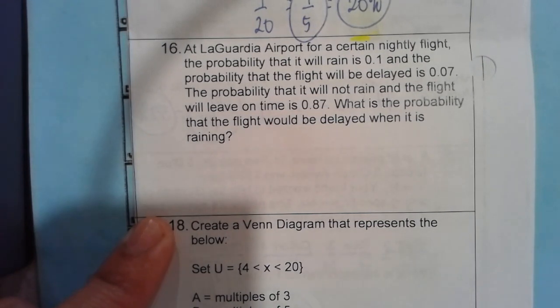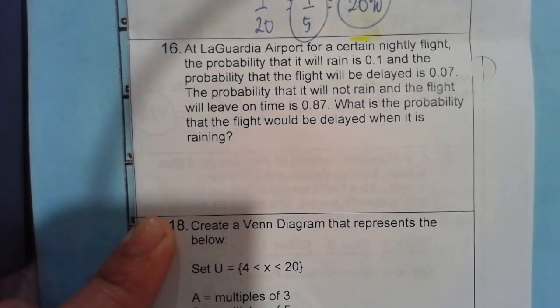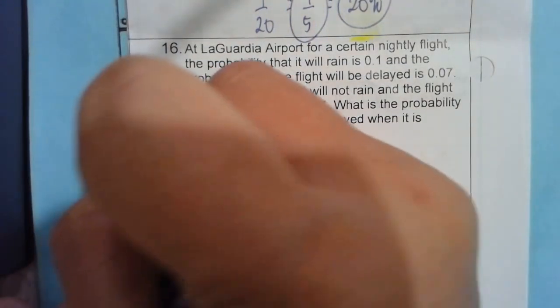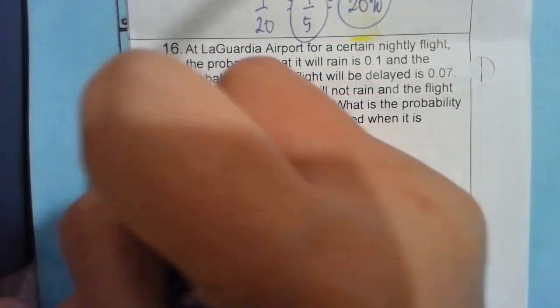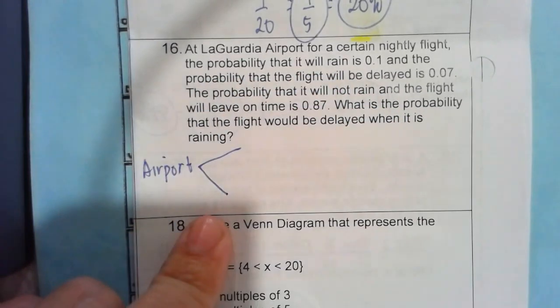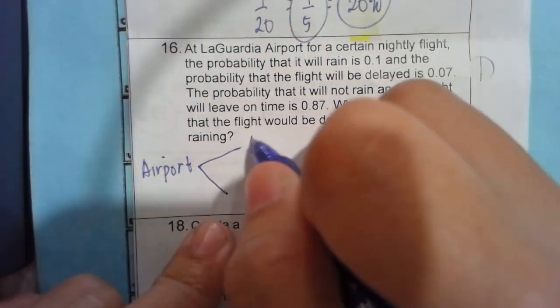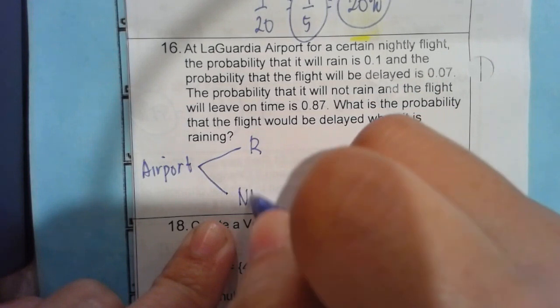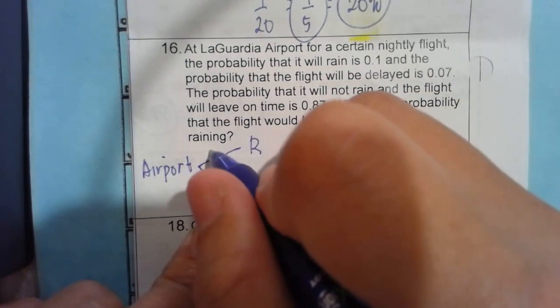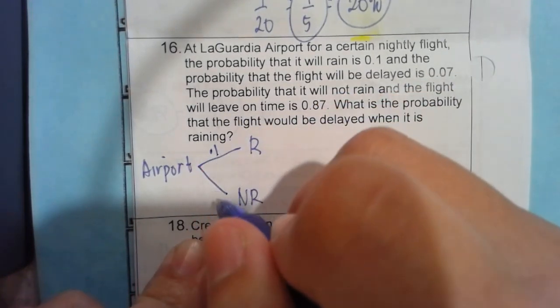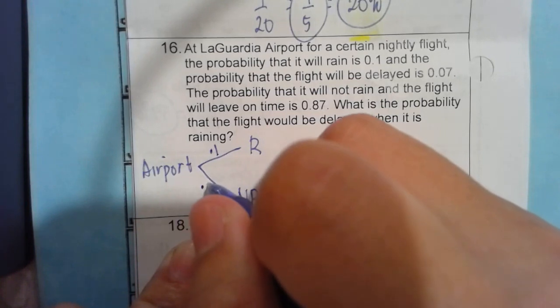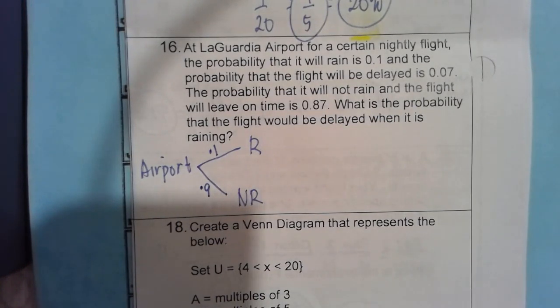Therefore, we need to label our base by LaGuardia Airport or just airport. So from that airport, it might rain and not rain. It will rain for 0.1 and not rain would be 0.9.